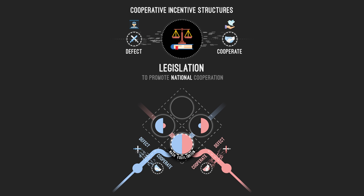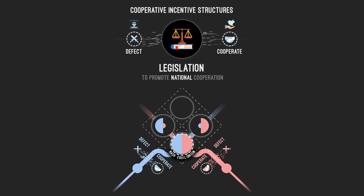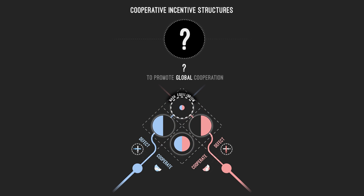The problem is that legislation only acts from governments upon citizens, but does not act upon governments. Under legislation, governments are not sanctioned for their defective behavior and are not rewarded for their cooperative behavior. This makes it very difficult for governments to cooperate, and very often we end up in situations in which the Nash Equilibrium is not aligned with the common good. Our inability to create global cooperative incentive structures is preventing us from addressing problems that require global cooperation between governments, like climate change or violent and economic conflict between nations.